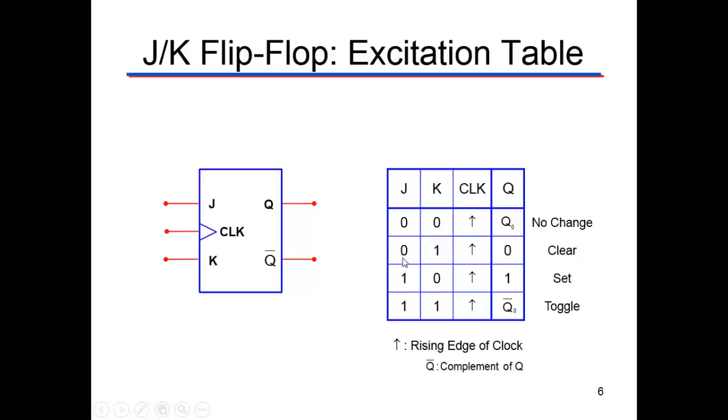When J is zero and K is one and the clock comes by, it becomes the clear, and that changes Q to zero.